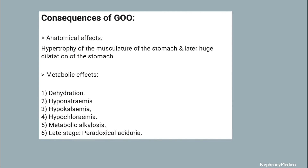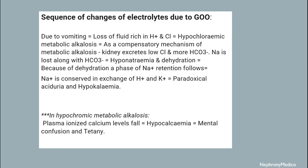The consequences of gastric outlet obstruction: anatomical effects include hypertrophy of the musculature of the stomach and later huge dilatation of the stomach. Metabolic effects include dehydration, hyponatremia, hypokalemia, hypochloremia, metabolic alkalosis, and in the late stage paradoxical aciduria.